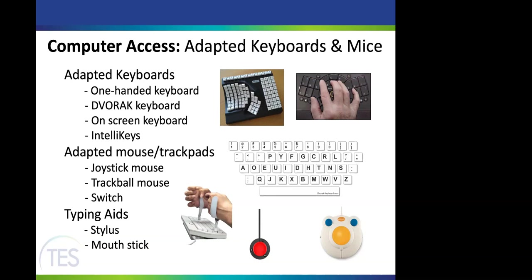For typing aids, some people don't have voluntary finger movement or lack that fine motor control but want to type faster. You can use a typing stylus — one for each hand — and people can actually type quite quickly with those. Those with spinal cord injuries may use mouth sticks, and again, people can type amazingly fast with those.